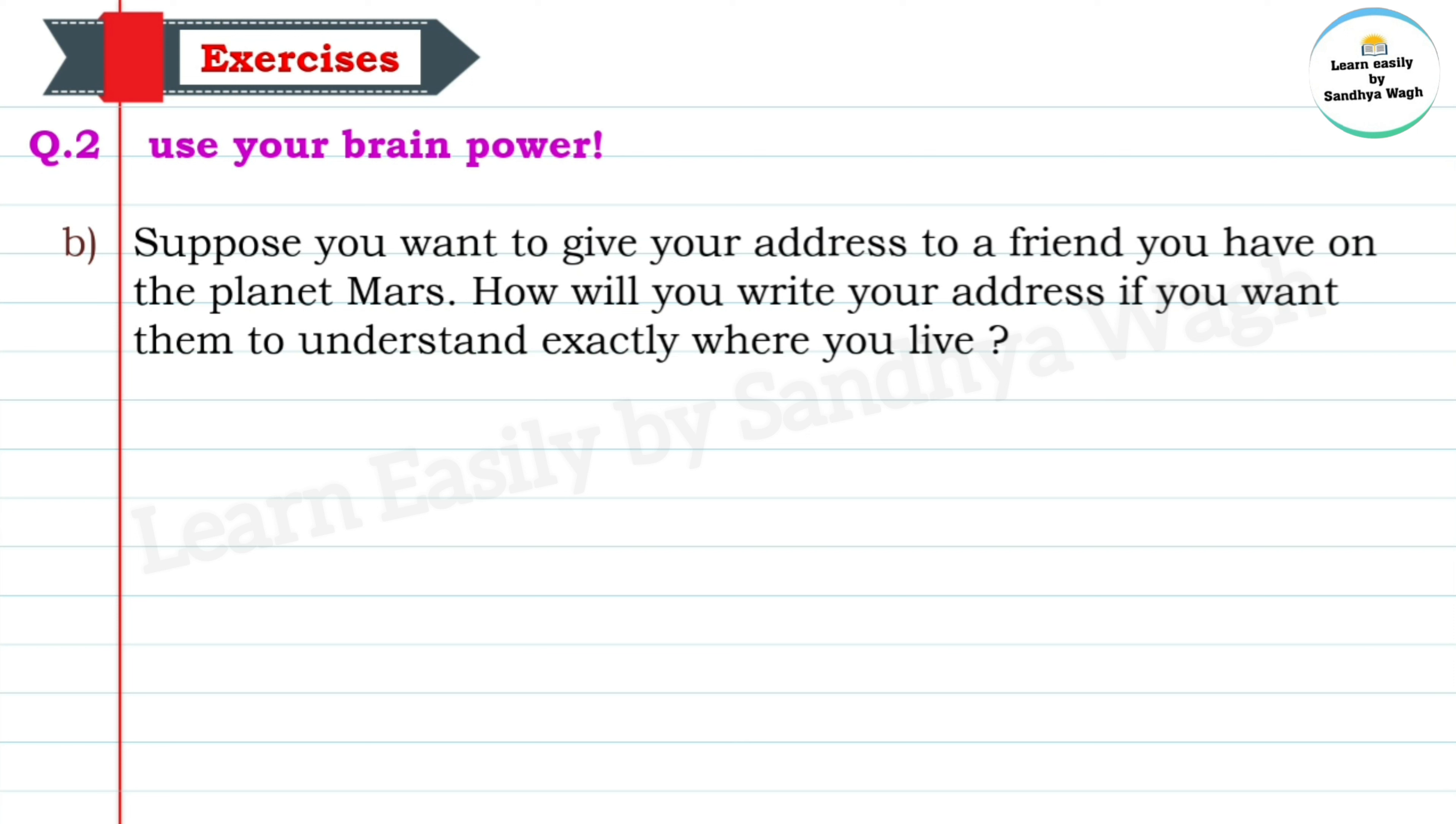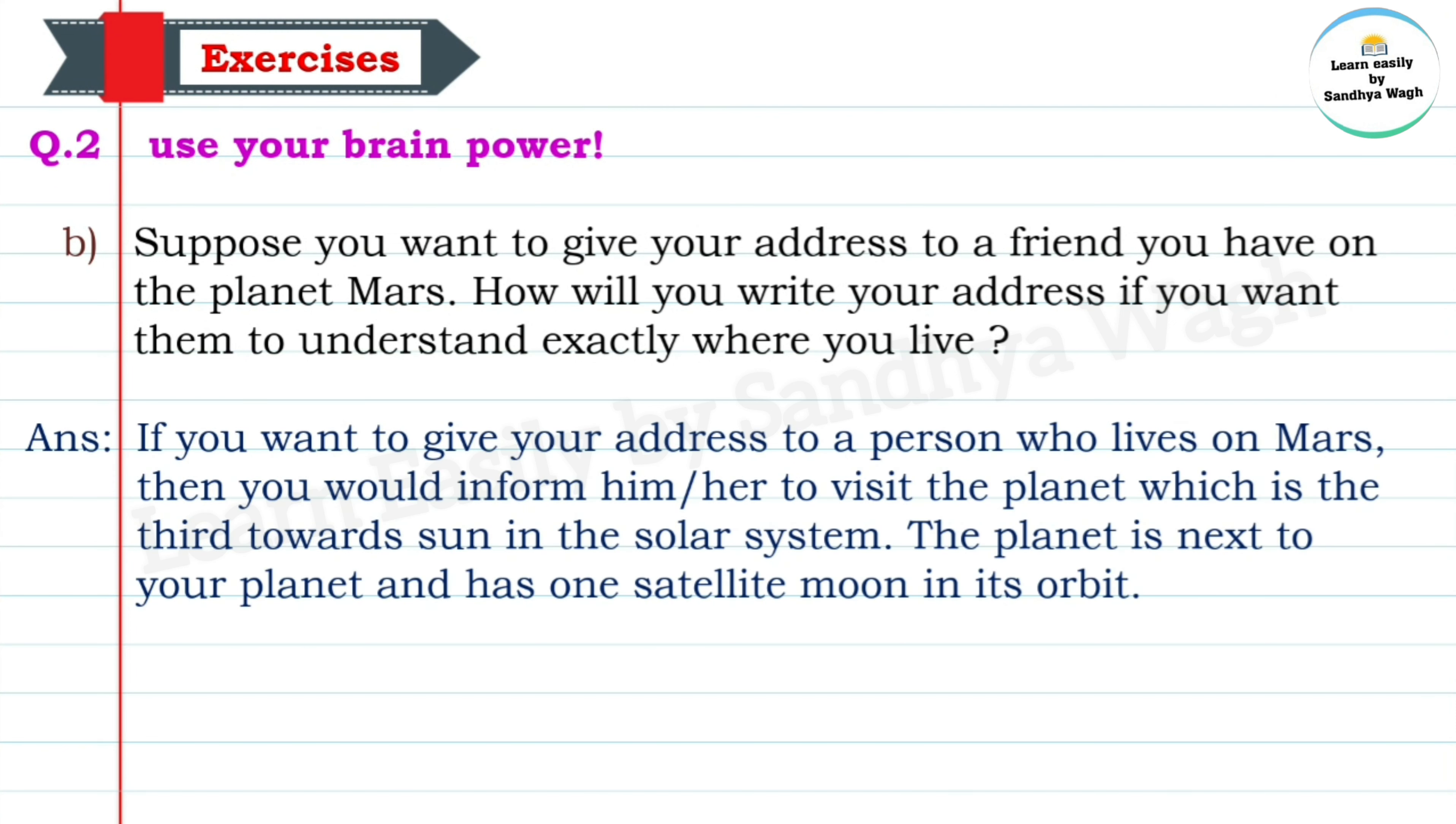Question 2b: Suppose you want to give your address to a friend you have on the planet Mars. How will you write your address if you want them to understand exactly where you live? Answer: If you want to give your address to a person who lives on Mars, then you would inform him or her to visit the planet which is the third from the Sun in the solar system. The planet is next to your planet and has one satellite, the moon, in its orbit.